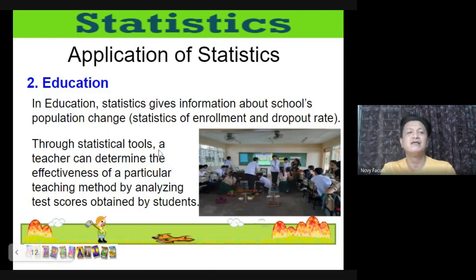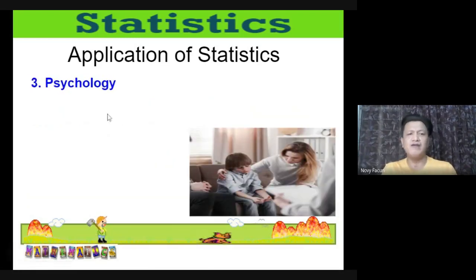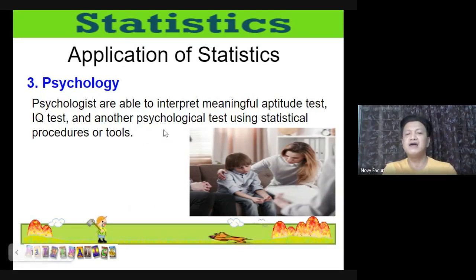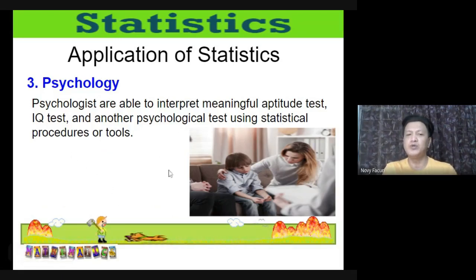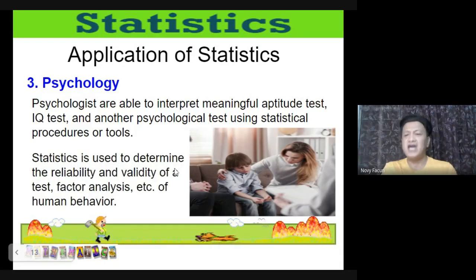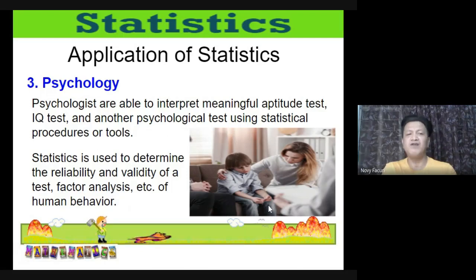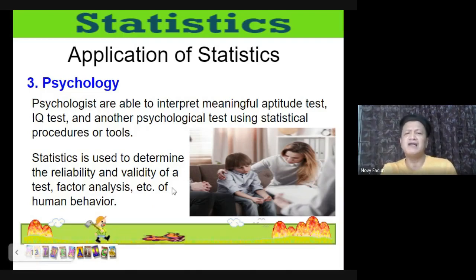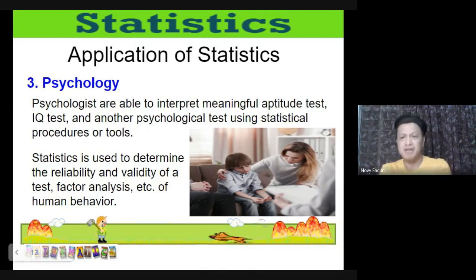In psychology, psychologists are able to interpret meaningful aptitude tests, IQ tests, and other psychological tests using statistical procedures or tools. Statistics is used to determine the reliability and validity of a test, as well as factor analysis of human behavior.